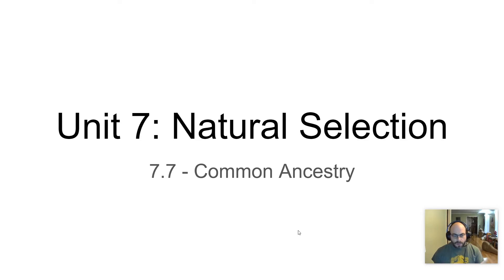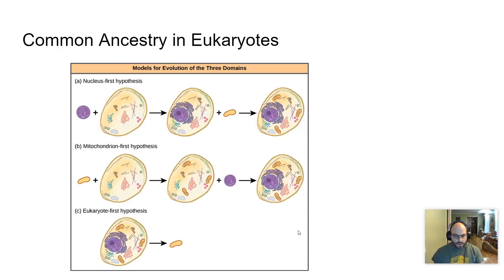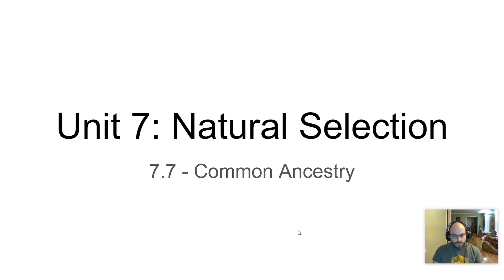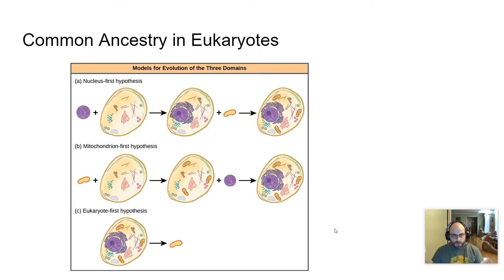All right, so continuing on through Unit 7 Natural Selection, looking at - wow, went a little too fast there - looking at 7.7 Common Ancestry. This is a bit of a, this will be a short lecture. Obviously, also a lot of review here, but that's good. Review is a good thing.